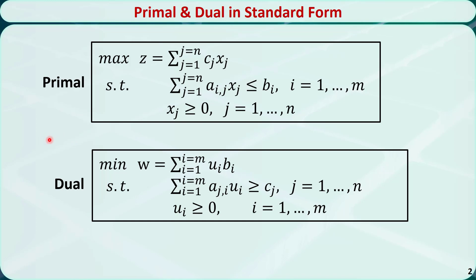These are general primal and dual problems in standard form. Note that in the primal, all the constraints are less than or equal to the right-hand side. We can introduce a slack variable si for each constraint to make it an equality constraint. In the dual, all the constraints are greater than or equal to the right-hand side. We can introduce an excess variable ej for each constraint to make it an equality constraint.